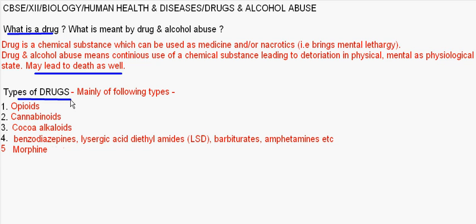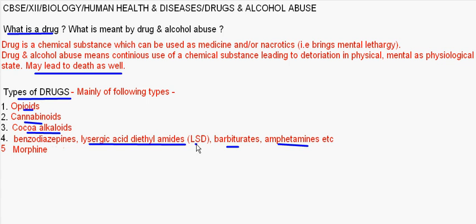Now coming to the types of drugs. Mainly there are 5 or 6 following types: opioids, cannabinoids, coca alkaloids, barbiturates, amphetamines, lysergic acid diethylamide (LSD), benzodiazepines, and also morphine as well as tobacco, which can be either smoked or chewed.